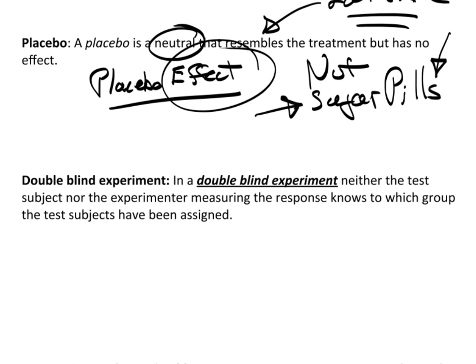In addition to blind experiments, we also have what's commonly referred to as a double-blind experiment. In a double-blind experiment, neither the test subject nor the experimenter knows whether the person is getting the real drug or the placebo. The idea is to help prevent or reduce human nature — if you know someone is getting the real drug and you're taking measurements, you may unknowingly bias the results by reporting better than actual results. So a double-blind experiment helps protect against that.